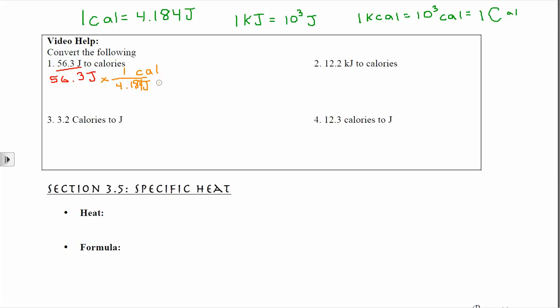So 56.3 divided by 4.184 — because 4.184 is in the denominator — gives 13.456, and my units are calories. Now for rounding: 56.3 has 3 sig figs, so I keep the 1, 3, and round the next digit. The 4 rounds up because of the following digit, giving 13.5 calories.